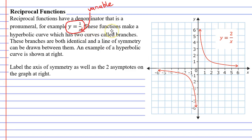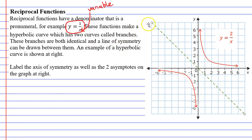These functions make what is known as a hyperbolic curve, which we can see at right. You'll notice that you get two branches. These branches are both identical to each other and they have a line of symmetry. If I draw the line of symmetry in green, you'll see that it goes through the diagonal of the Cartesian plane.